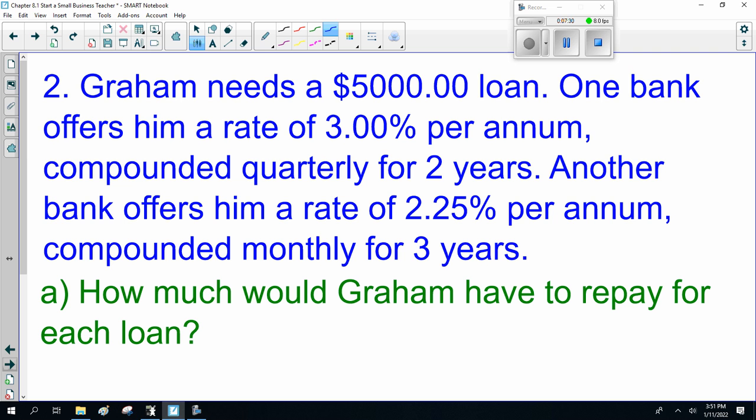Let's do one more example. Graham needs a $5,000 loan. One bank offers a rate of 3% per annum, compounded quarterly for two years. Another bank offers a rate of 2.25% per annum, compounded monthly for three years. How much would we have to repay for each loan? So, the first one: 3% per annum, compounded quarterly for two years.